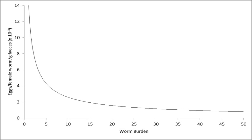For dioecious obligatory parasites, mated female worms are required to complete a transmission cycle. At low parasite densities, the probability of a female worm encountering a male worm and forming a mating pair can become so low that reproduction is restricted due to single-sex infections. At higher parasite densities, the probability of mating pairs forming and successful reproduction increases.